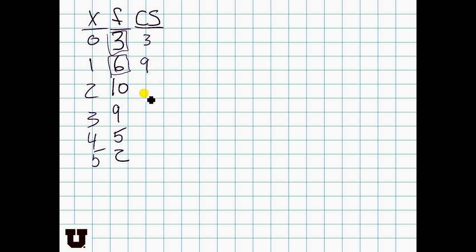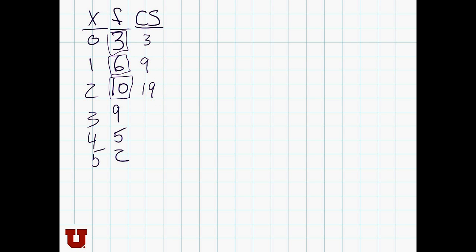How many have a value of 2 or below? Now we have to add 10 to the sum. 19. And here we have 28, 33, and 35.